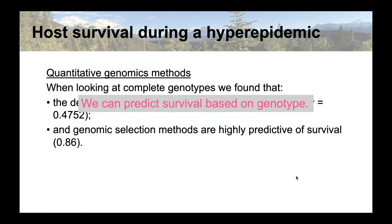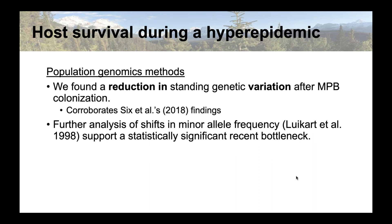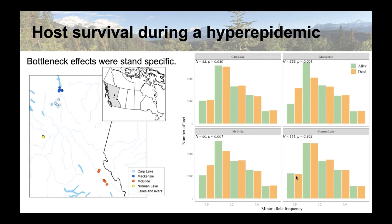But that only tells us about the whole genotype of an individual — it doesn't delve into what specific genes and markers are important. So we looked at population genomics methods and found a reduction in standing genetic variation after mountain pine beetle colonization, similar to what Diana and her group found with neutral genetic markers. Further analysis showed that shifts in minor allele frequency support significant recent bottlenecks, though this isn't true for every stand — it's only true for specific stands.